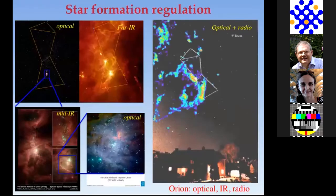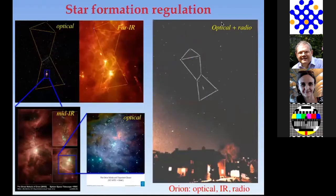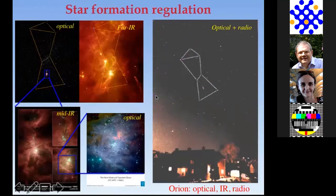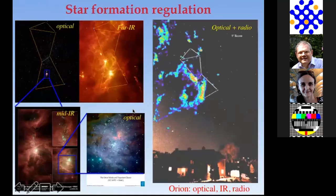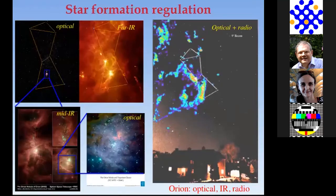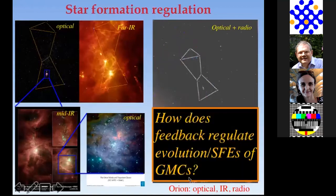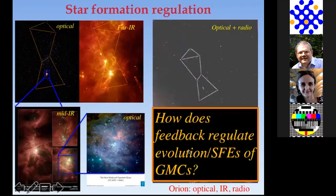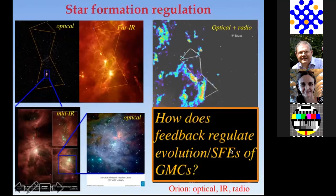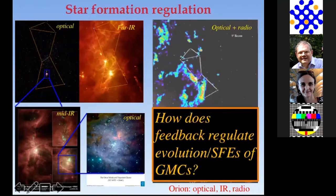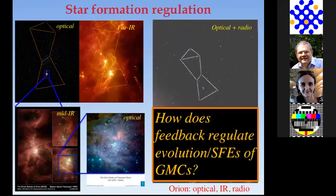What I'll be talking about next is the effects of this feedback on scales of individual clouds, like the Orion cloud. One of the very basic questions is: if you have feedback, how does that limit the star formation efficiency in a given cloud, and more generally, how does it regulate the evolution of that cloud? Let me first summarize what we mean by star formation efficiency.